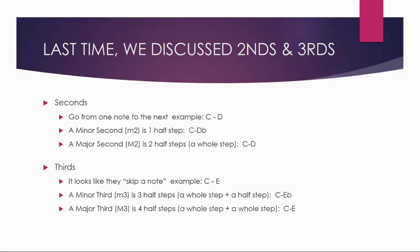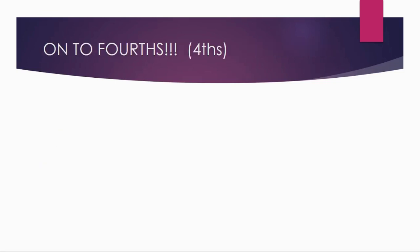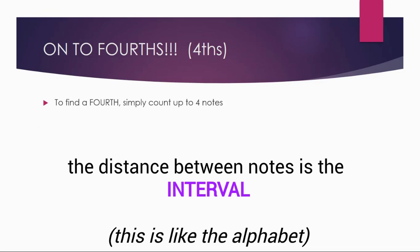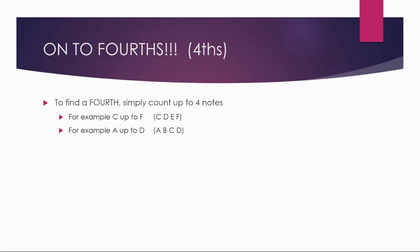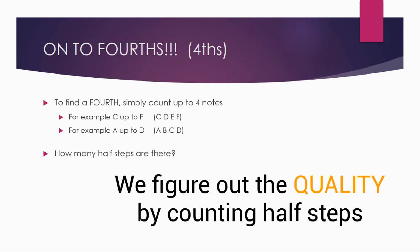Now here comes the new stuff — we're talking about fourths. To find a fourth, just like with seconds and thirds, we're going to count up four notes. For example, C up to F: C, D, E, F — one, two, three, four — four notes, that's a fourth. Another one: A up to D — A, B, C, D — one, two, three, four — these are fourths. But now you might ask: how many half steps? Let's figure out the quality.